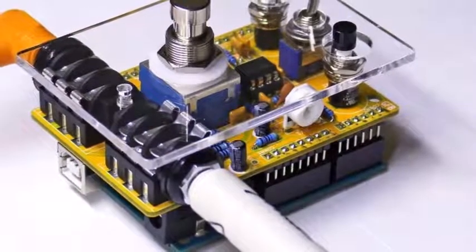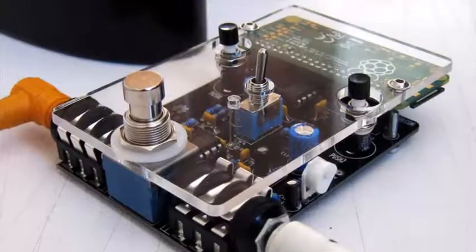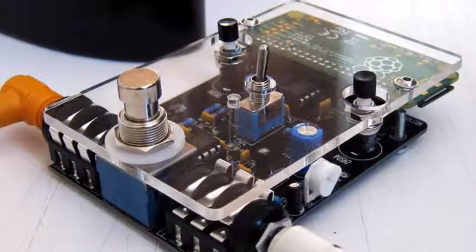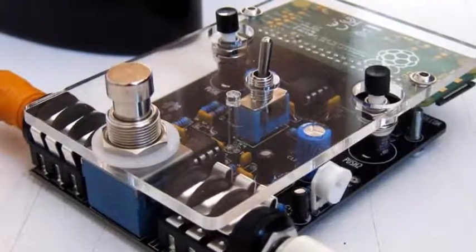The Pedalshield Mega programmable guitar pedal is powered by an Arduino Mega 2560 and Mega ADK and comes equipped with a 1.3 inch OLED screen and a true bypass foot switch.